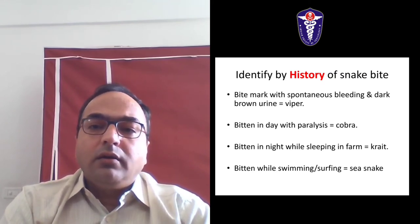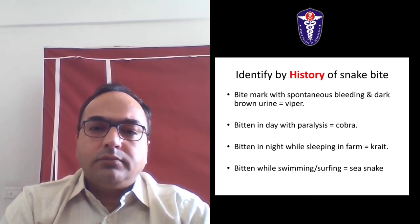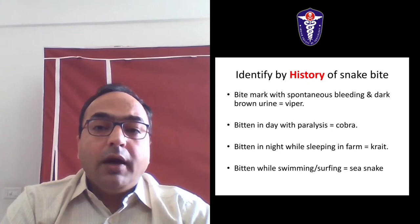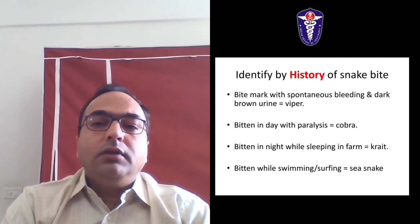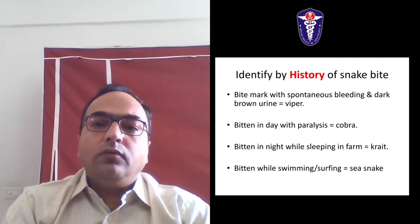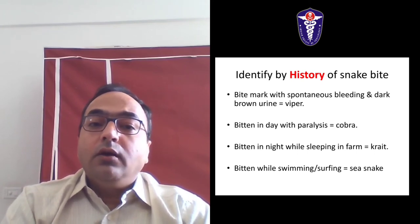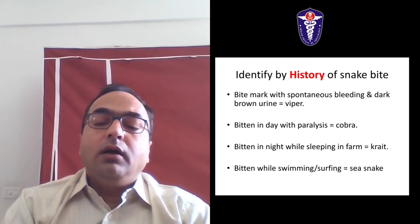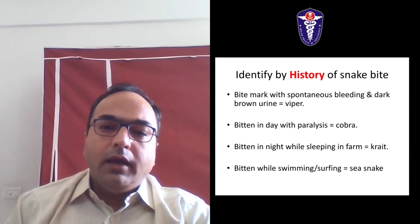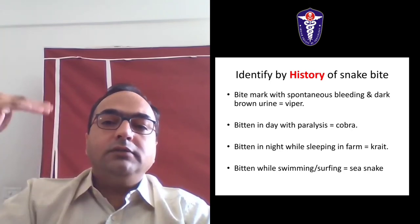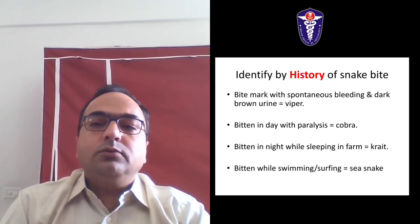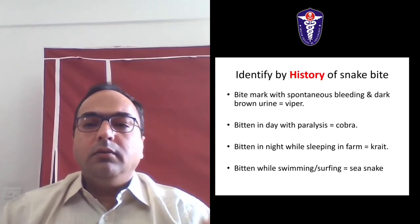Kraits are very timid animals - they do not come out in daylight as they are afraid of predators like kites. They come out only at night and bite people sleeping in farms on the floor. They will not climb up, unlike cobra. So the basic remedy for preventing krait bites - as taught by Dr. Bhavaskar - is during rainy season: sleep on a charpai (bed) not on the floor, and cover the charpai from all sides with a mosquito net.